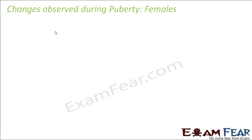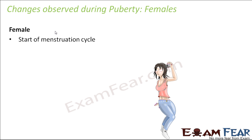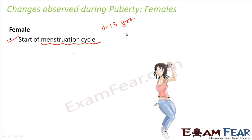Some changes observed in females during puberty include the start of the menstruation cycle. This cycle takes place periodically every 28 days and involves bleeding from the vagina, lasting some 3–4 days every month. As long as this cycle continues, a female is in the reproductive phase and is capable of reproducing. Generally this cycle starts when a female is around 11–13 years old, and it stops around age 45–50. A female cannot reproduce before the cycle starts or after it stops, so the start of menstruation is an important indication of puberty.